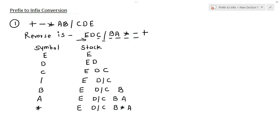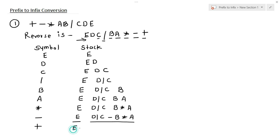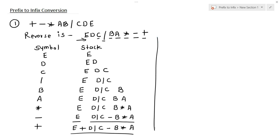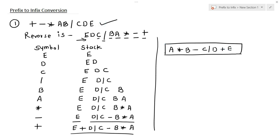Now we have minus. So here the expression is e, d divided by c, minus b into a, because the topmost operands in the stack are d divided by c and b multiplied by a. The next symbol is plus. Now we have only two operands left in our stack — e and the second is d divided by c minus b into a. So we write down e plus d divided by c minus b into a. This is our intermediate result. Reversing the above expression, we get the final answer: a multiplied by b minus c divided by d plus e. So this is our final answer for the above prefix expression.